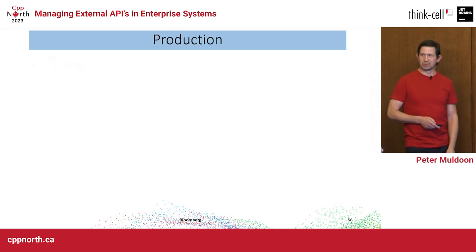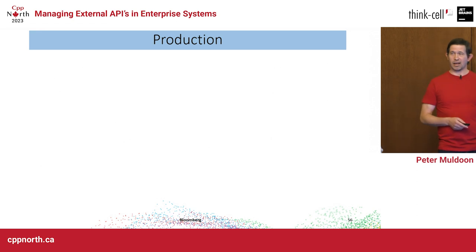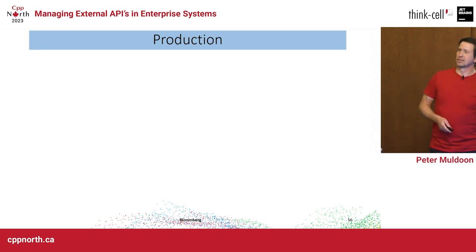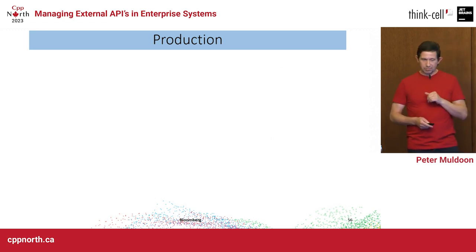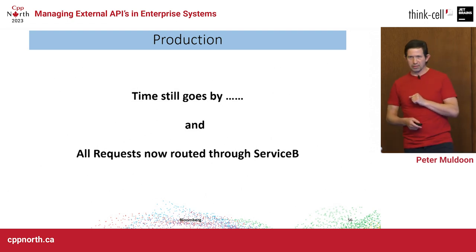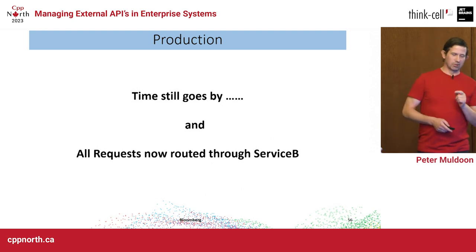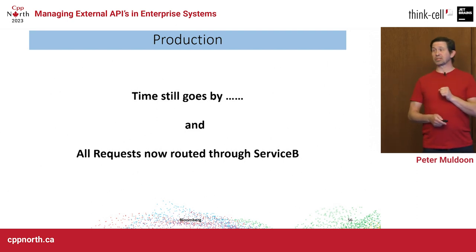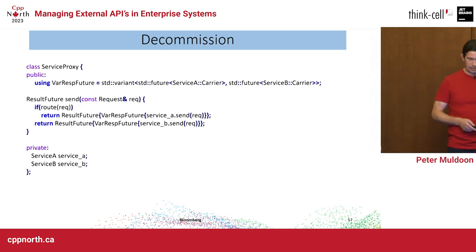This goes into production — and without issue. I then left the team to go work on even bigger problems. But time still goes by in production. Eventually, two years later, all requests are now routed through service B.